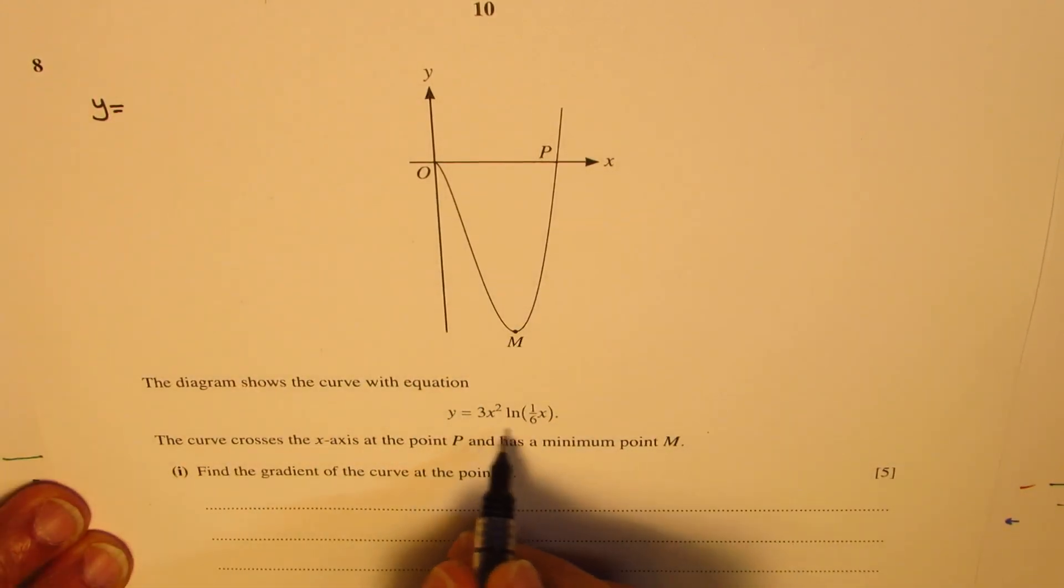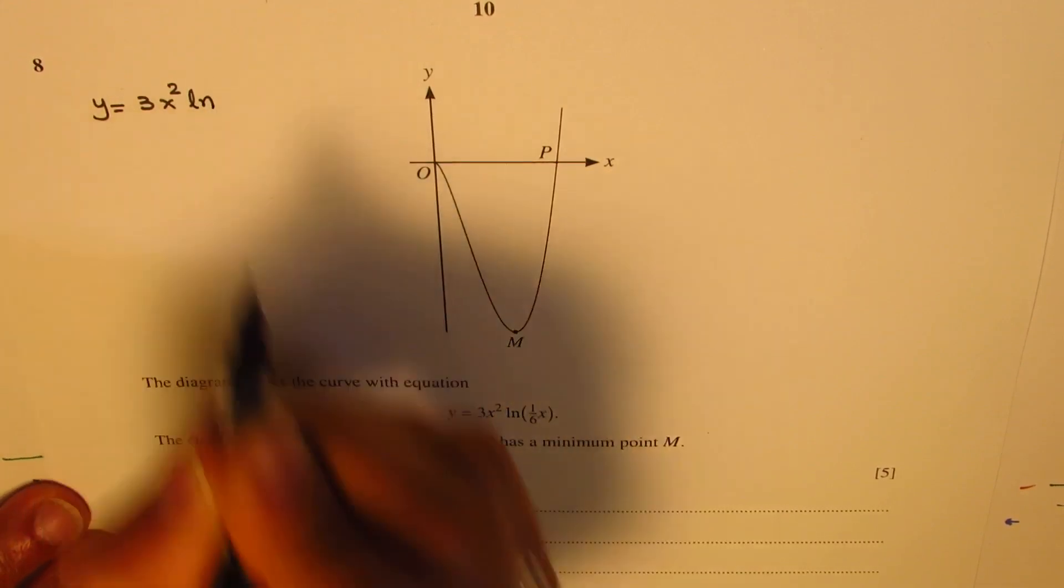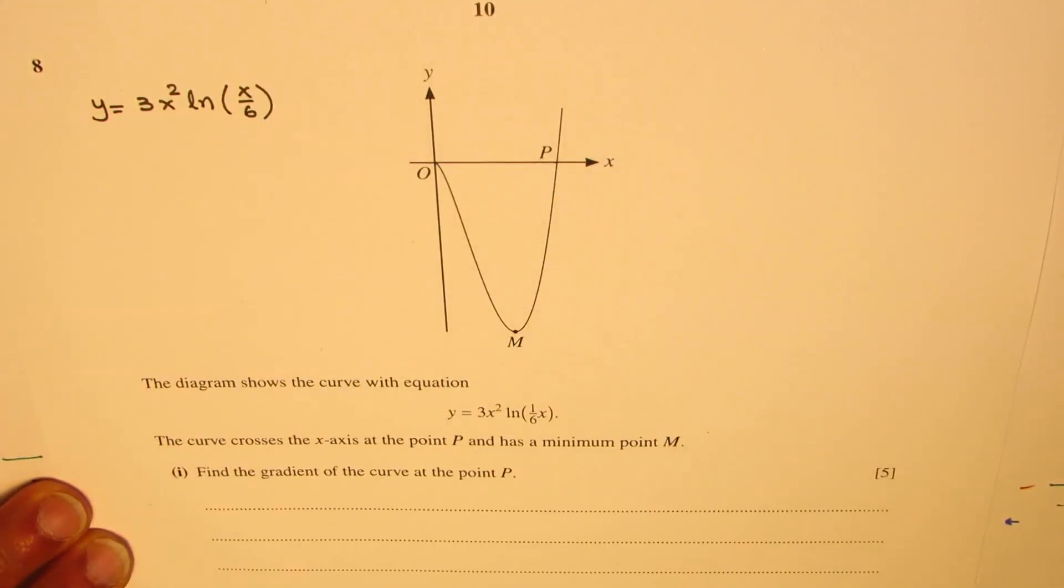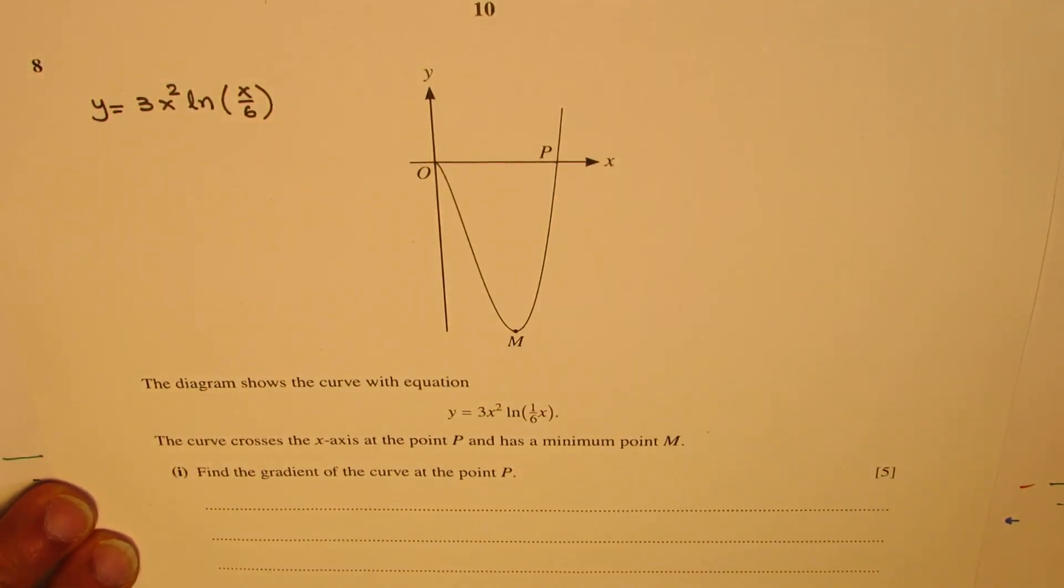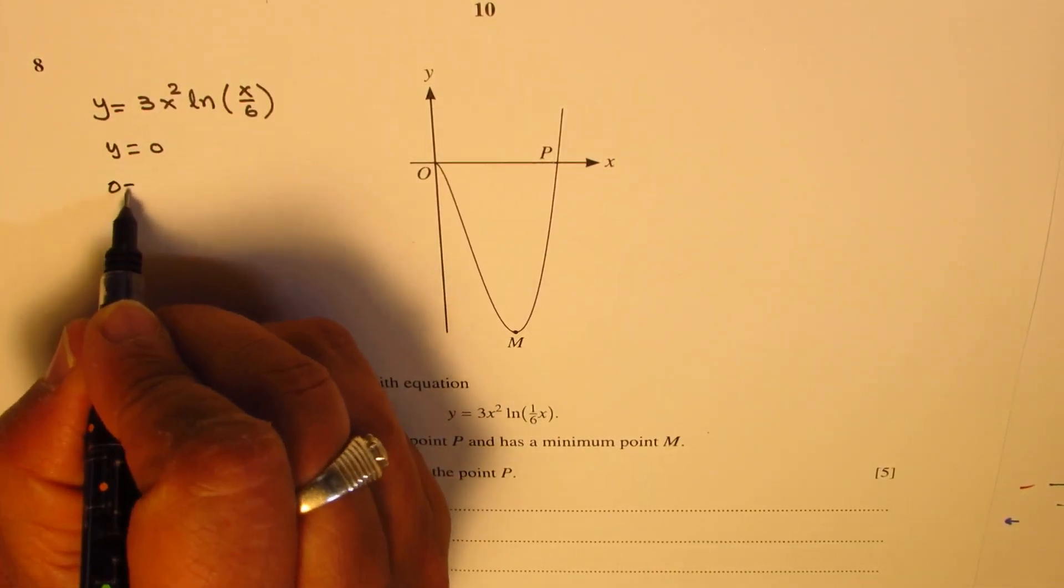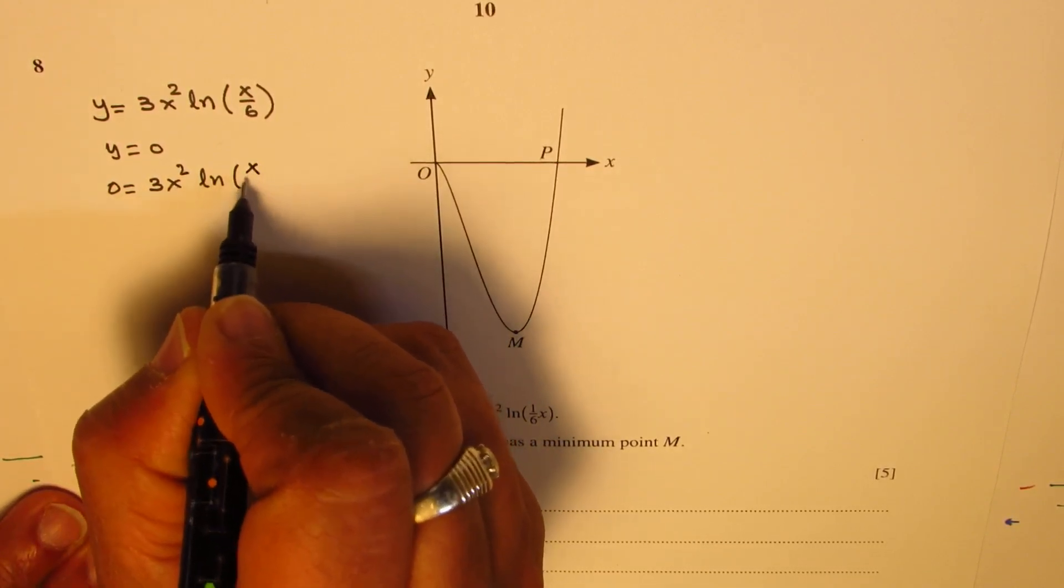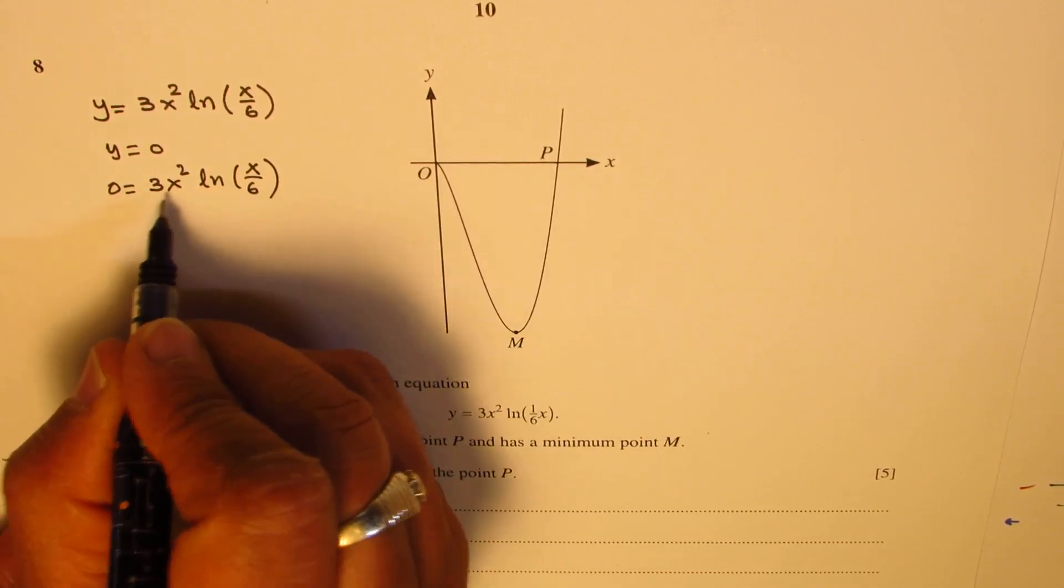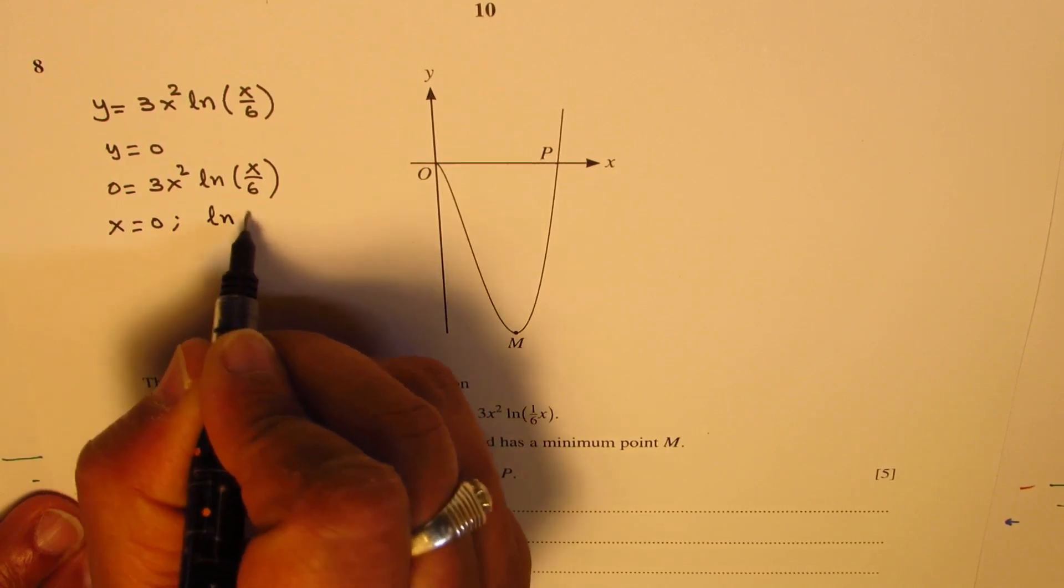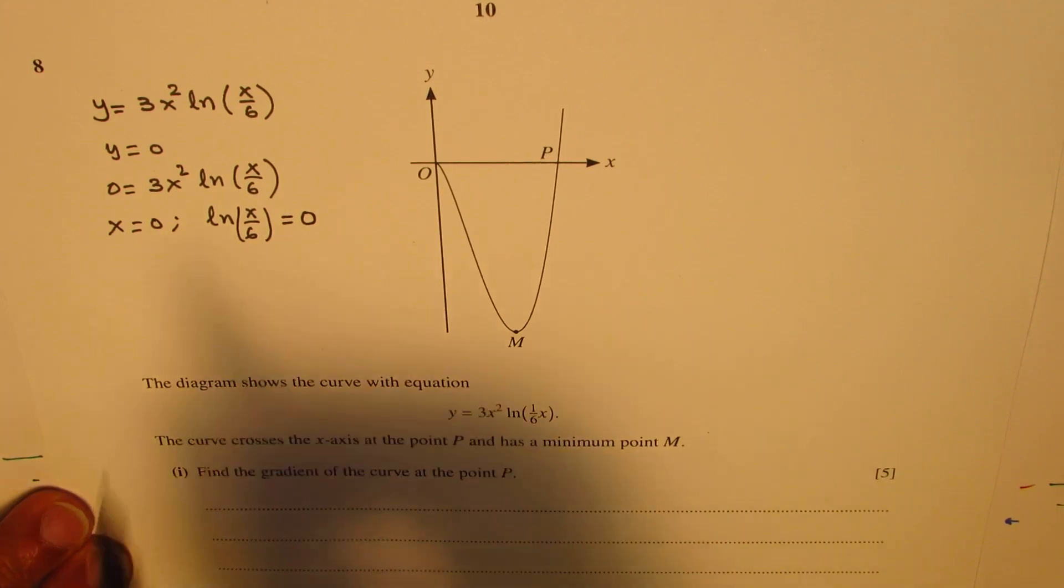So let's find the point P on the curve, y equals 3x squared ln(x/6). At point P, it is an x-intercept, we know that y is equal to 0. Substituting 0 here, we get 0 equals 3x squared times ln(x/6). So that gives us two values, x could be 0, or ln(x/6) could be 0.